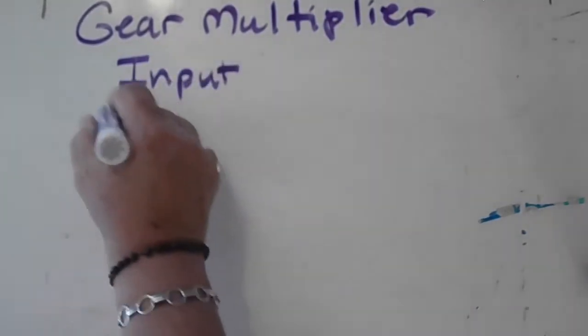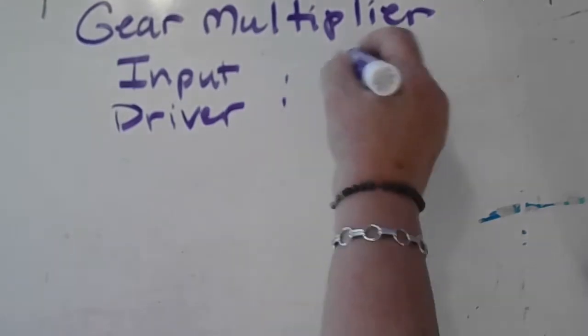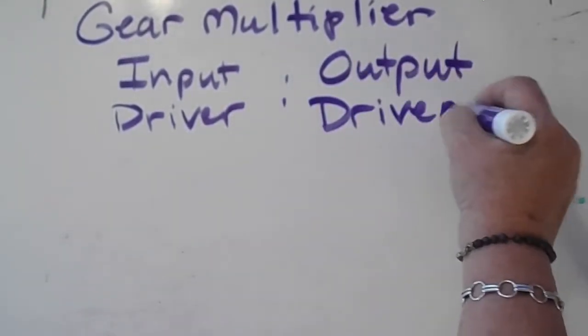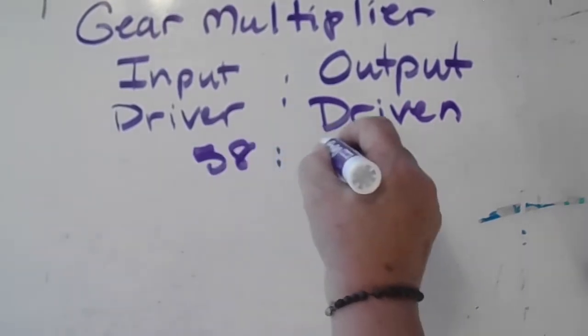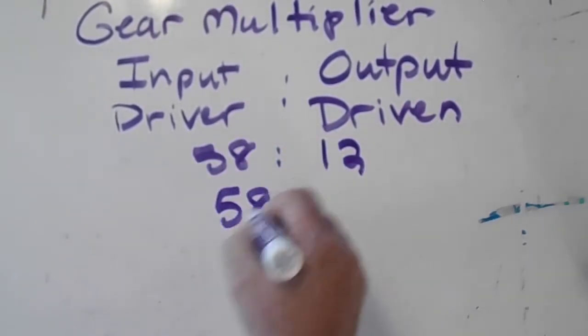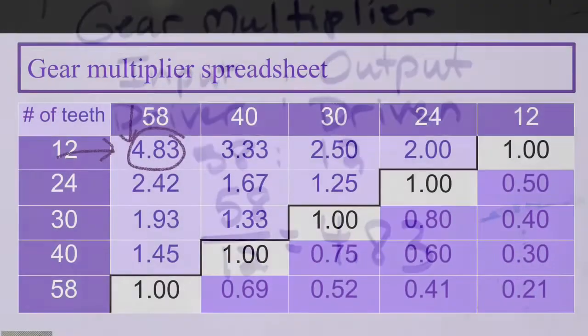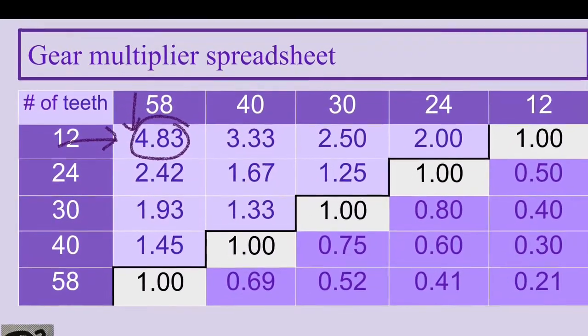Consider a set of five gears, each having a different number of teeth: 58, 40, 30, 24, and 12. For example, if the driver gear is the 58 and the driven gear is the 12, dividing 58 by 12 yields a gear multiplier of 4.83.